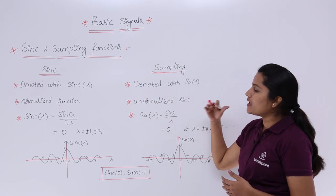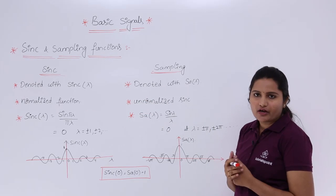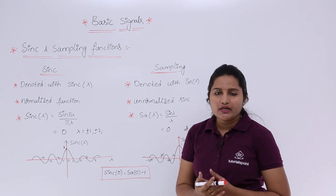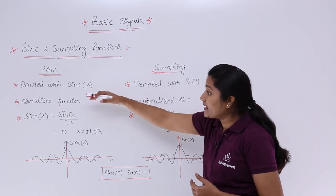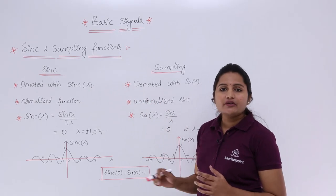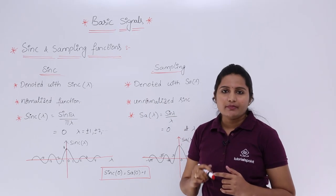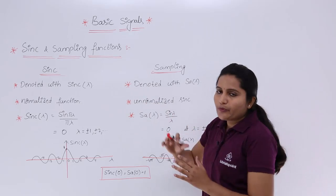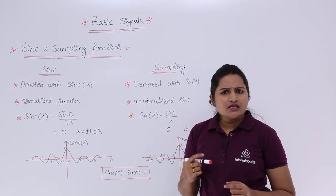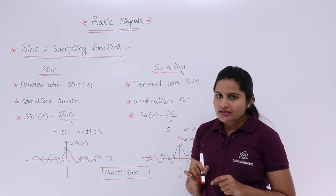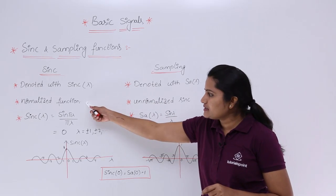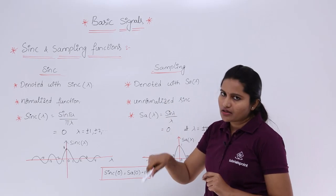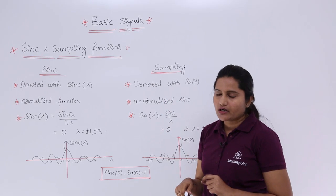The sampling function is an unnormalized sinc function — it is similar to an unnormalized sinc function. This is what makes the difference between sinc and sampling function. So these two functions are not the same: sinc is a normalized function, while the sampling function is similar to the unnormalized sinc function.